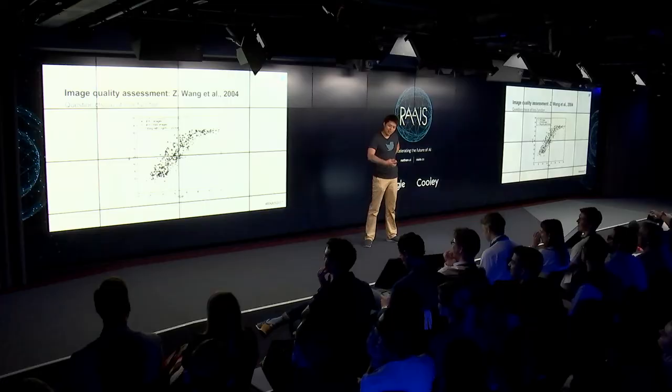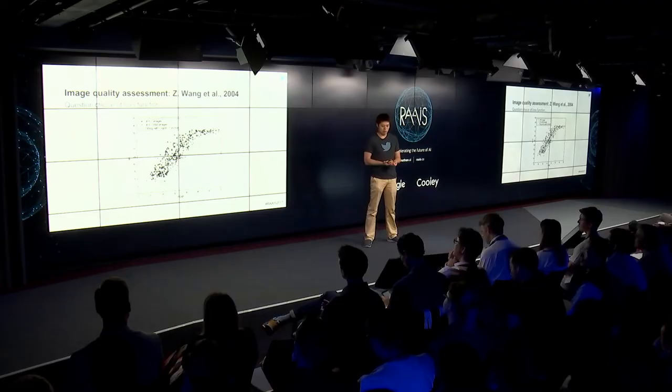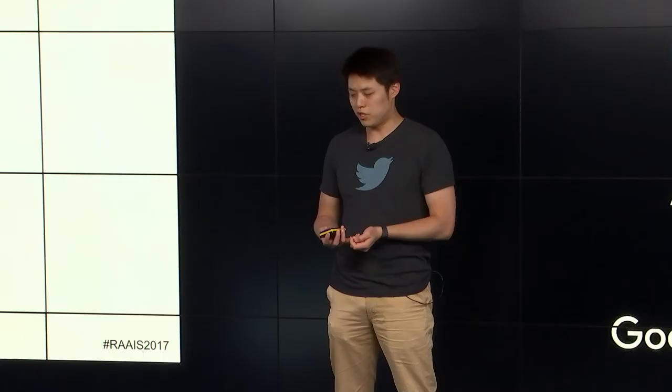Moving on to more recent work: we've been looking at how to address this problem. One thing we thought about is that the choice of loss function is not particularly well-suited for high-fidelity results or to reflect how we as humans view images.